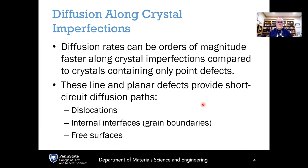Diffusion along crystal imperfections: diffusion rates can be orders of magnitude faster along crystal imperfections compared to crystals containing only point defects. This is true of kinetic properties in general — when they vary, they often vary by orders of magnitude. So it's not a subtle change; it's drastic differences in the diffusion coefficient as a result of having these defects. These line and planar defects can provide what we call short-circuit diffusion pathways — pathways along which diffusion is significantly faster compared to going through a perfect crystal.